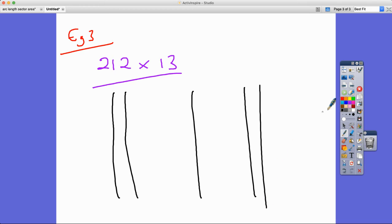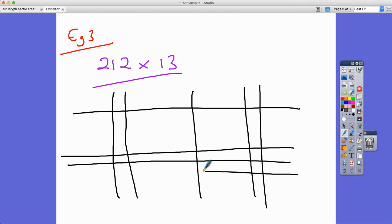So we have 212 and we have 13. All we need to do is put the intersections in there so they stand out and we can count them easier.